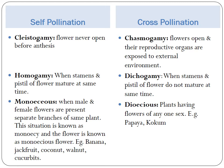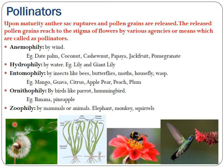Now let us understand what pollinators are. Upon maturity, the anther sac ruptures and pollen grains are released. The released pollen grains reach the stigma of flowers by various agencies or means, which are called pollinators — meaning the ways or means by which pollen grains reach the stigma are known as pollinators.